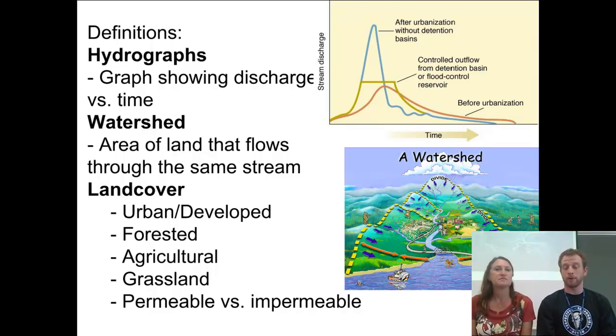And then the last one is land cover. We're going to talk a lot about the type of land use that's done in an area. So like we're used to urban and developed around here. But like if you go to a forest, it's a lot different interaction with the water there. Agriculture, we're talking about farming. Grassland, talk about prairie. And then talk about permeable versus impermeable. And we should remember those words from groundwater, right?